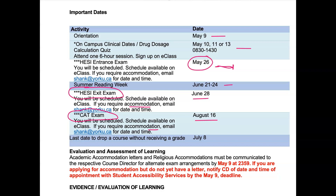The last date to drop this course without receiving a grade is July 8th. Any accommodation letters and religious accommodations must be communicated to the respective course director by May 9th at 23:59. If you are applying for accommodation but do not yet have a letter, notify the course director of your appointment date with Student Accessibility Services by the May 9th deadline.